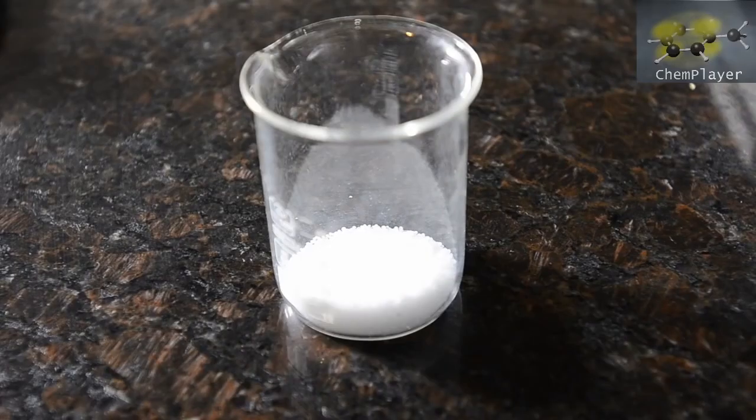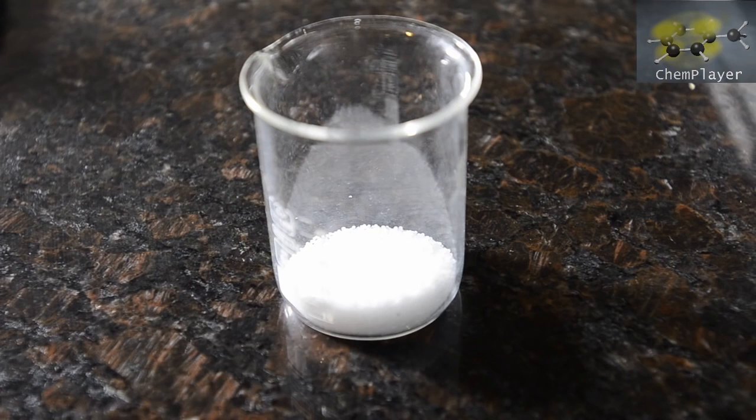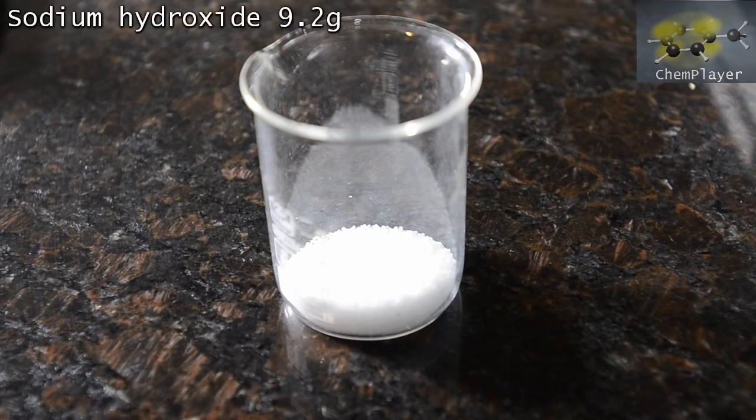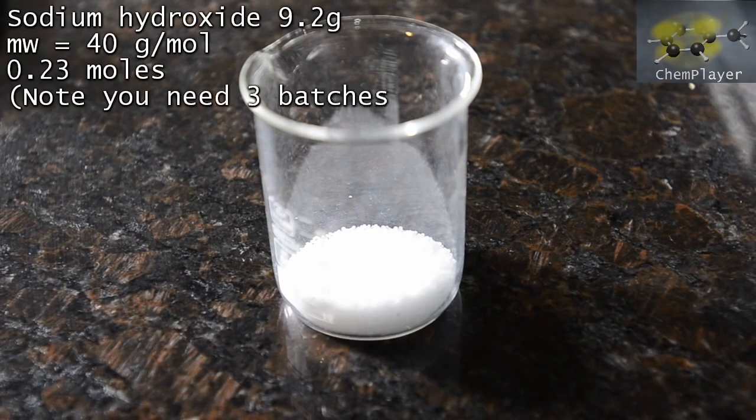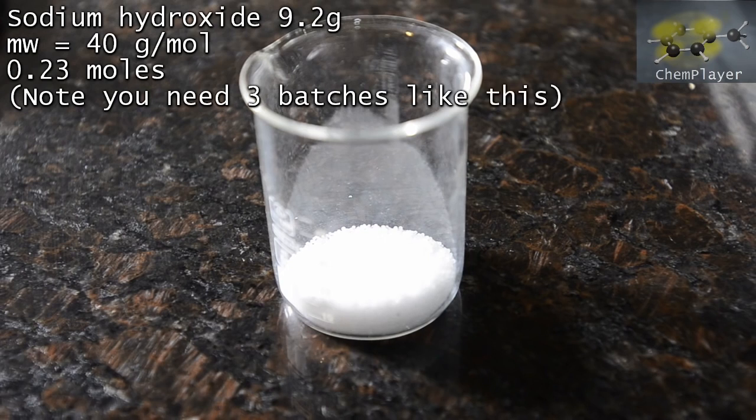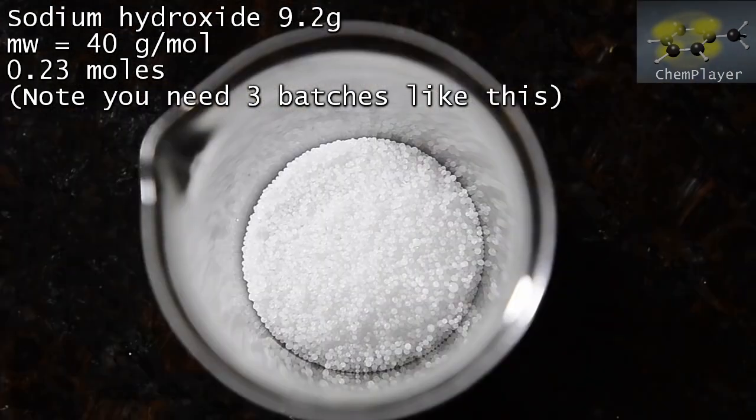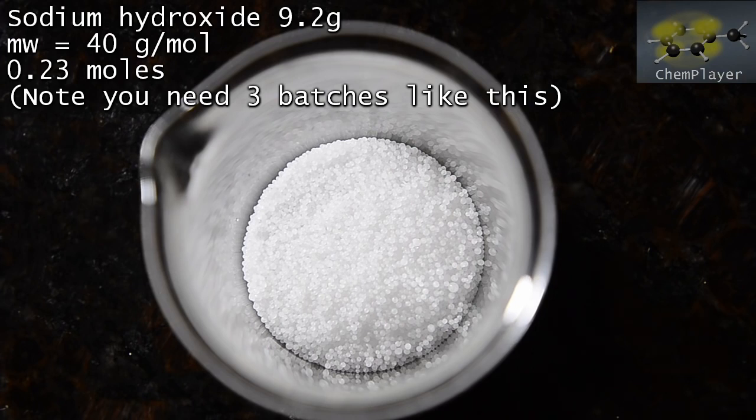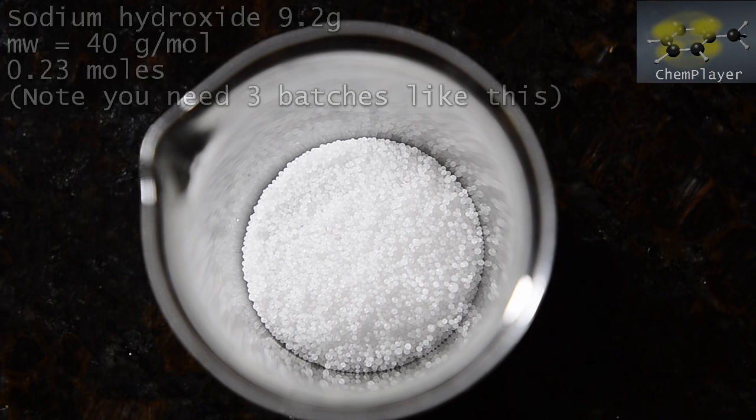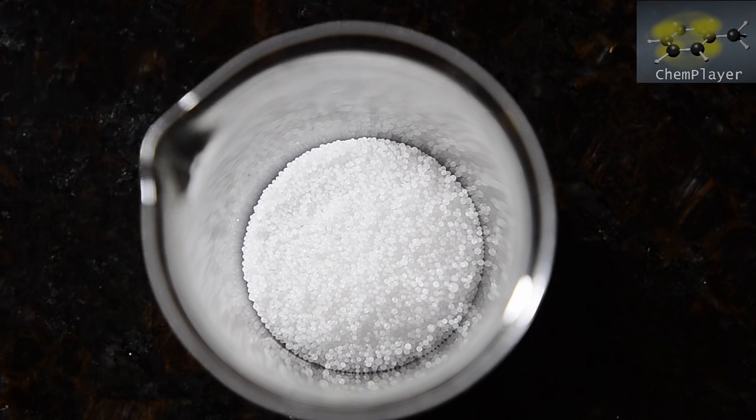To release the hydrazine from hydrazine sulfate we're going to use one mole equivalent of sodium hydroxide. So we've got 9.2 grams here. Note that you'll need two more portions of sodium hydroxide with this weight later on in the reaction as well. And potassium hydroxide works fine as well.